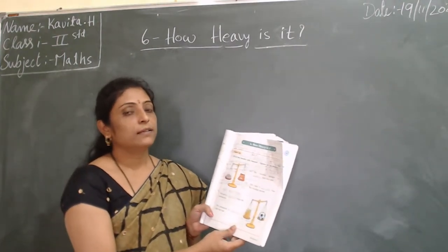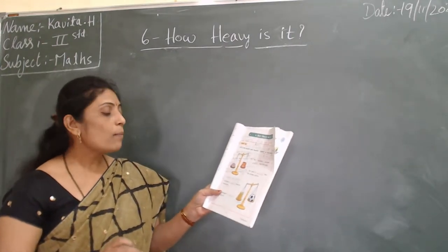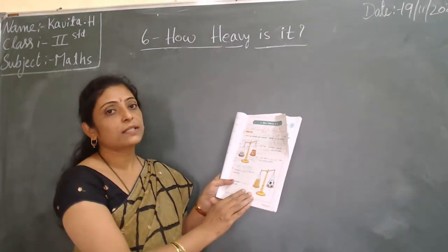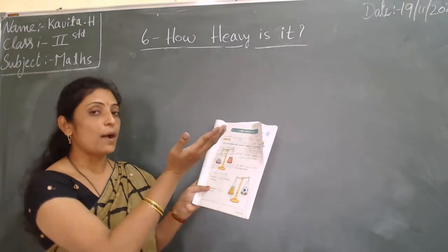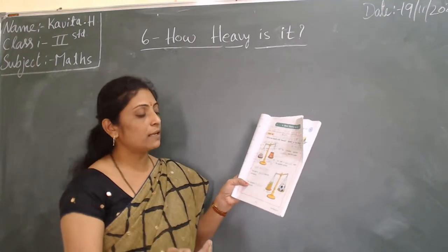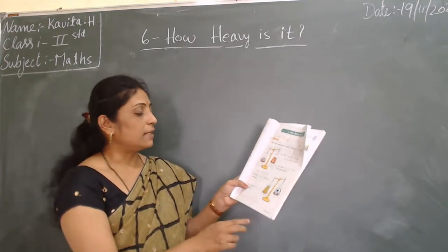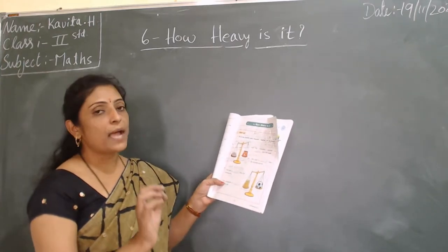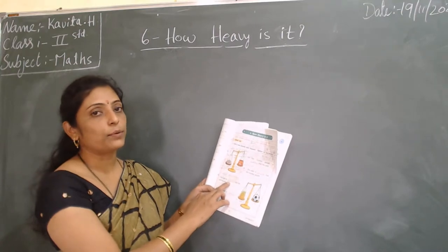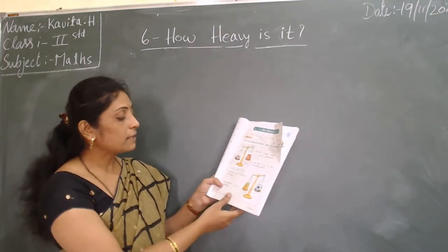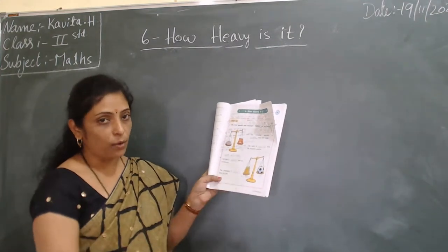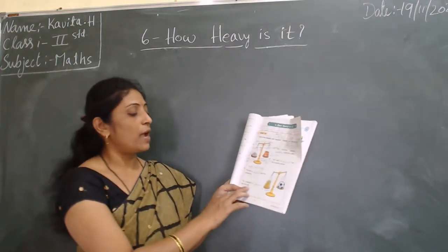The noodle packet is up because it is lighter than the cake. Write 'lighter' here. Next — the cake is down and the noodle packet is up, so the cake is heavier than the noodle packet. Write 'heavier' here. Next question — the ball versus the pineapple. Pineapple pan is down, ball pan is up. Pineapple is heavier, ball is lighter.